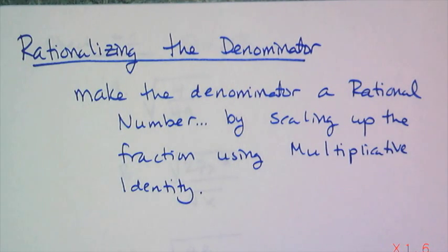And the way we do that is to simply scale up the fraction using the multiplicative identity, meaning multiply the fraction by a version of 1 that gets rid of the square root in the denominator. And so let me show you an example.